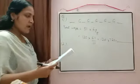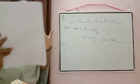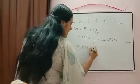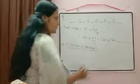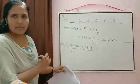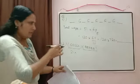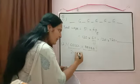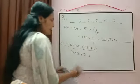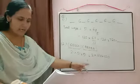Second condition: all girls sit together and all boys sit together. Treat girls as one unit and boys as one unit — two units arranged in 2! ways. Girls rearrange in 5! ways; boys rearrange in 5! ways. Total = 2! × 5! × 5! = 2 × 120 × 120.